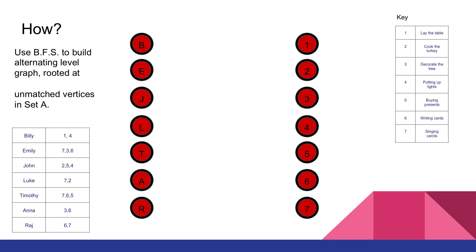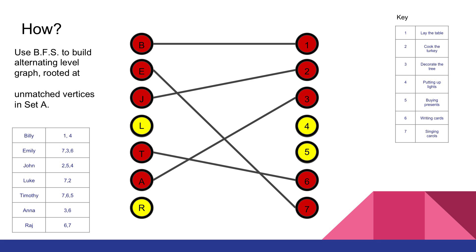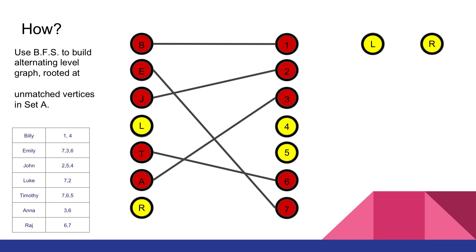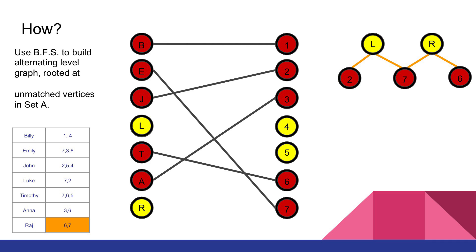Now the next step is where we start using the breadth-first search to build an alternating level graph rooted at unmatched vertices in set A. I've highlighted the vertices that are unmatched in yellow. We get the unmatched vertices on the left side in set A and put them at the top of our alternating level graph. Next, we look in our graph and table to see what edges that are not in the matching go from these vertices. For Luke I've got an edge to 7 and an edge to 2, so I add those. For R I've got an edge to 6 and an edge to 7, so I add them.